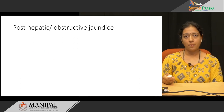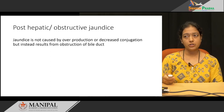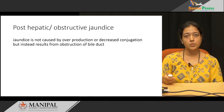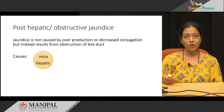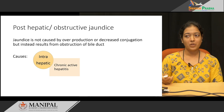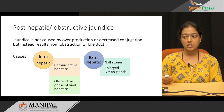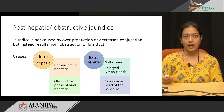The last type is posthepatic or obstructive jaundice, caused not by overproduction or decreased conjugation but by obstruction of the bile duct. Obstruction can be intrahepatic — such as chronic active hepatitis or obstructive phase of viral hepatitis — or extrahepatic, such as gallstones, enlarged lymph nodes obstructing the bile passage, or carcinoma of the head of the pancreas.